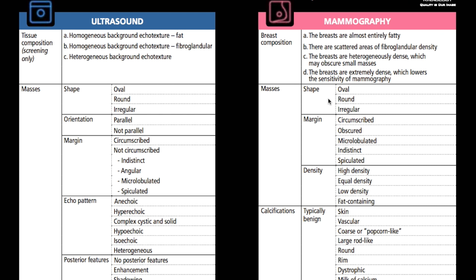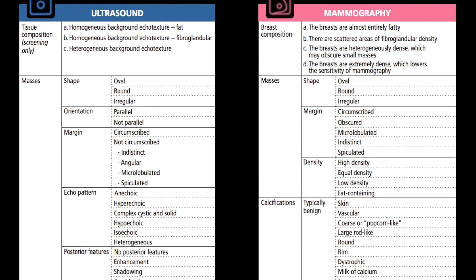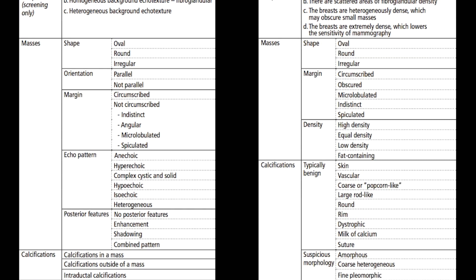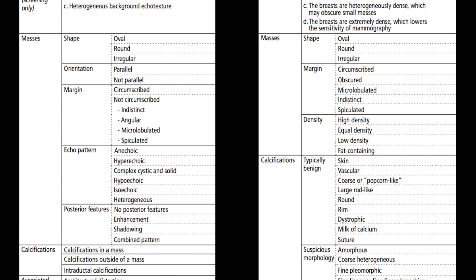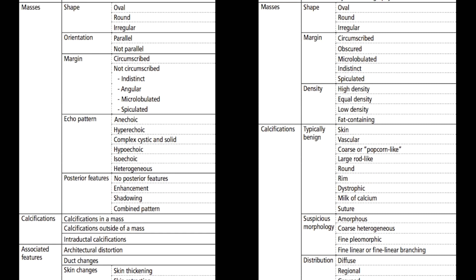For mass density, it is either high density, equal density (isodense), low density (hypodense), or fat-containing. Calcifications can be a little tricky. For typically benign calcifications, we have many patterns that we can see.